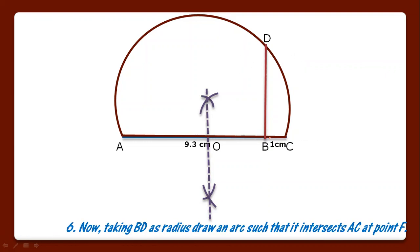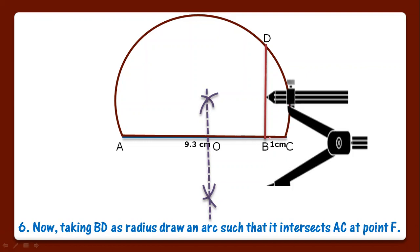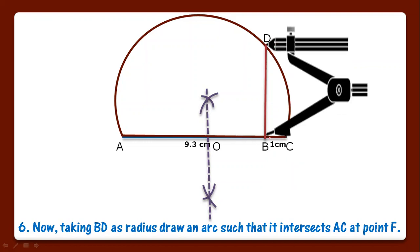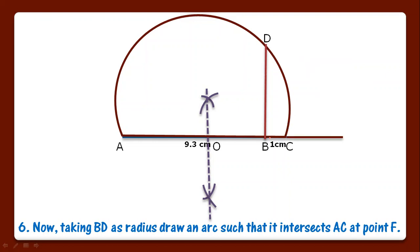Now in sixth step, take BD as radius and draw an arc in such a way that it intersects AC at point F. In this way we will mark that point as F.